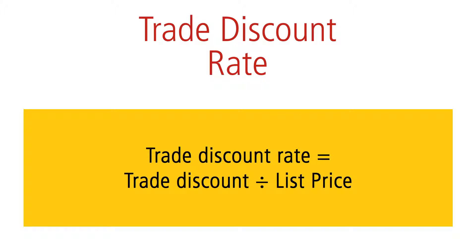The trade discount rate can be calculated using the familiar percentage formula: rate equals portion divided by base. For this application, the amount of the trade discount is the portion, or numerator, and the list price is the base, or denominator. So trade discount rate equals trade discount divided by list price.